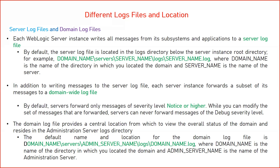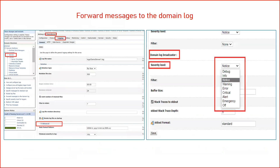There are different severities of log messages written to your log files — for example, Critical, Notice, and Debug for troubleshooting purposes. By default, when WebLogic Server writes logs, the severity level is Notice or higher, so any log defined at Notice level or above will be written to your log files. If you want to change this to a different value, you can do so from the admin console.